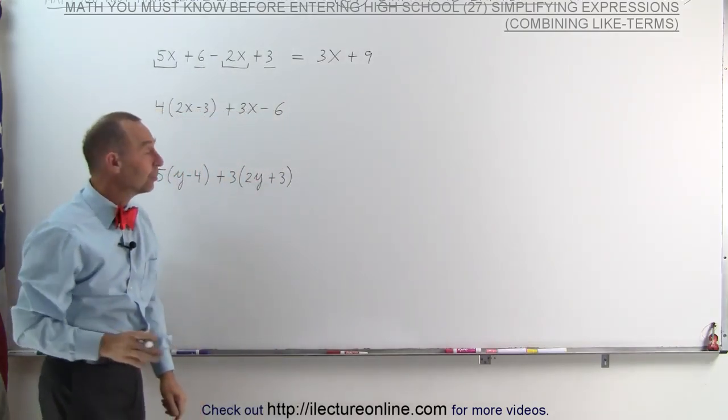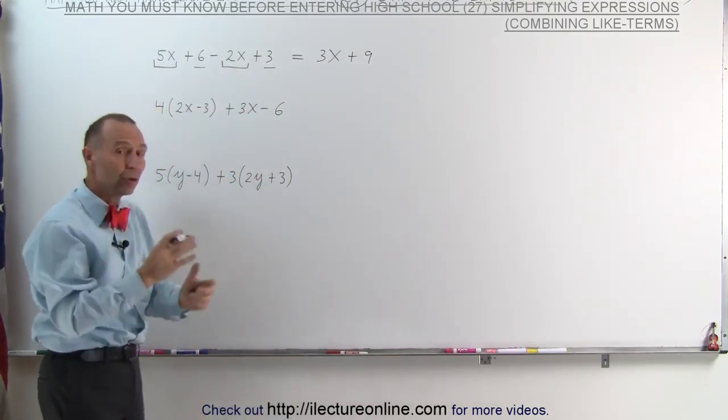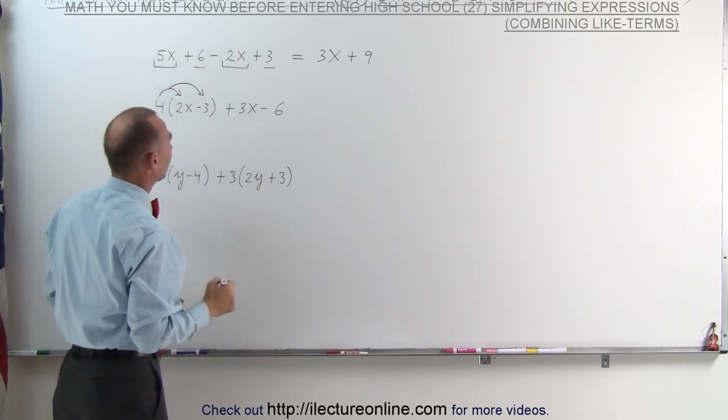On the second example, notice we have parentheses. Before we can combine like terms, we should get rid of parentheses first, which means we're going to distribute the 4 on the first term and the second term inside the parentheses.